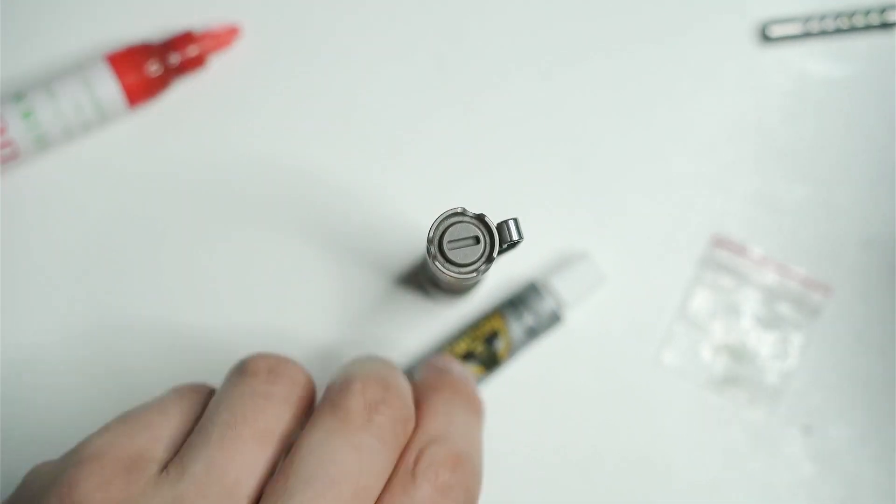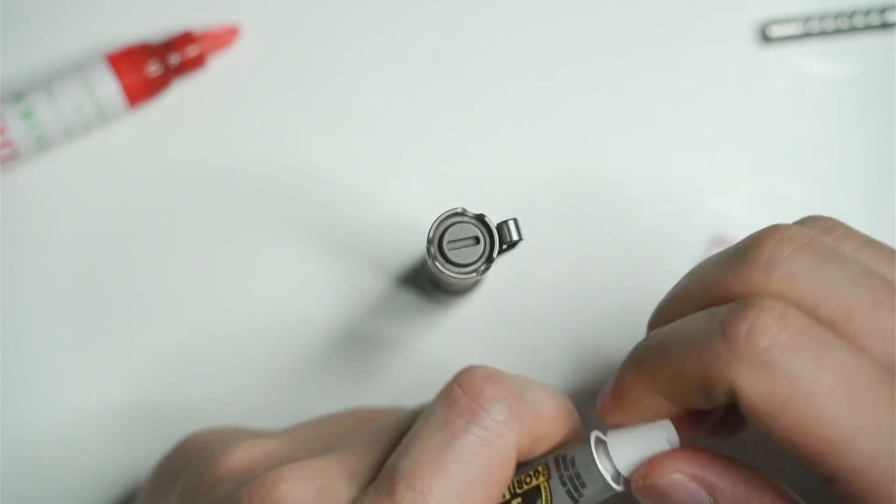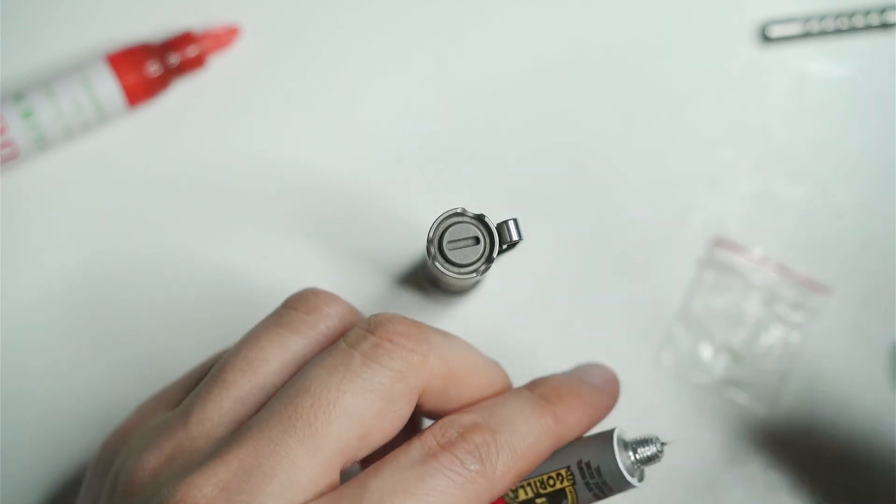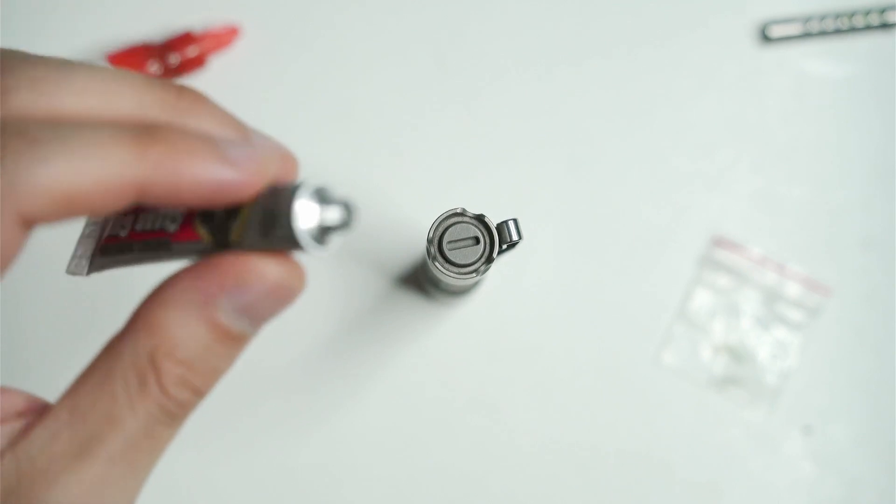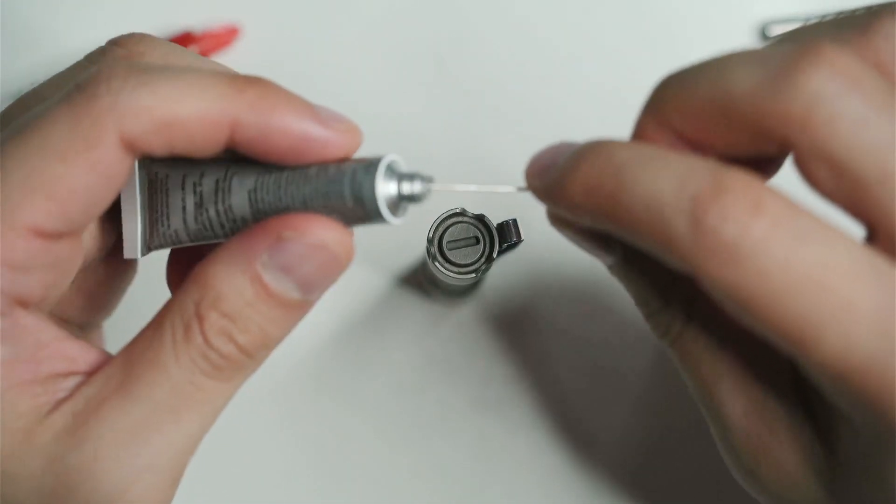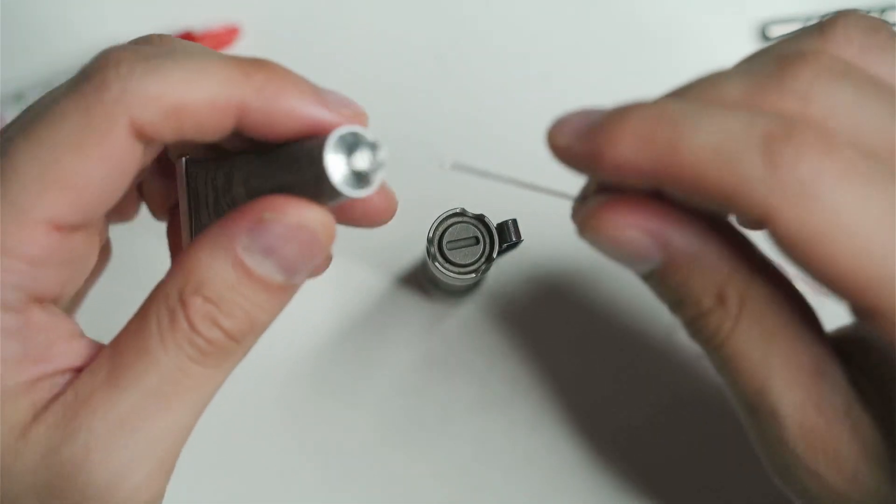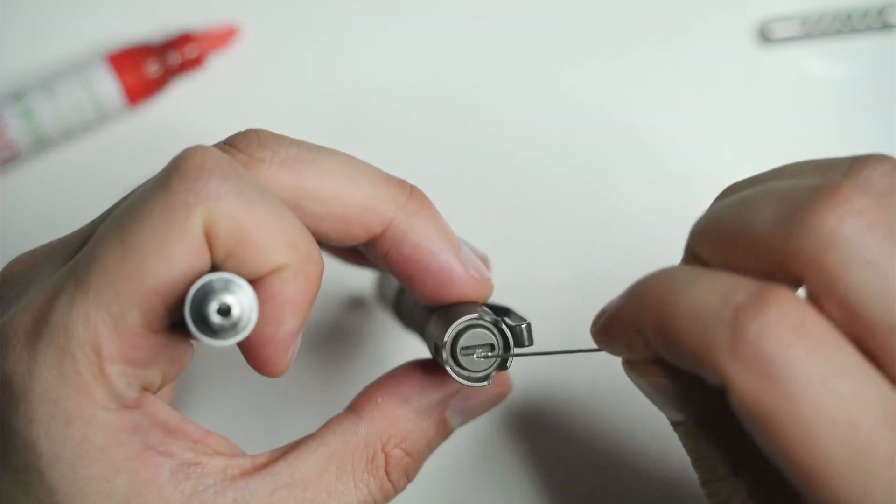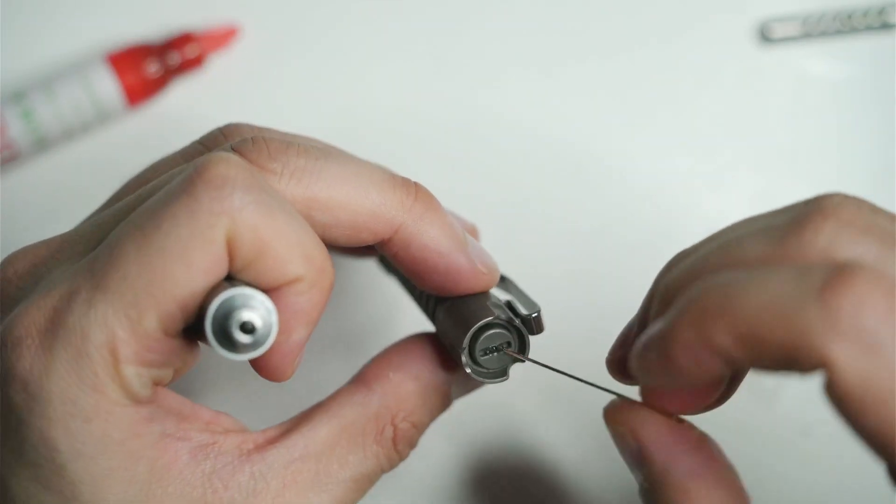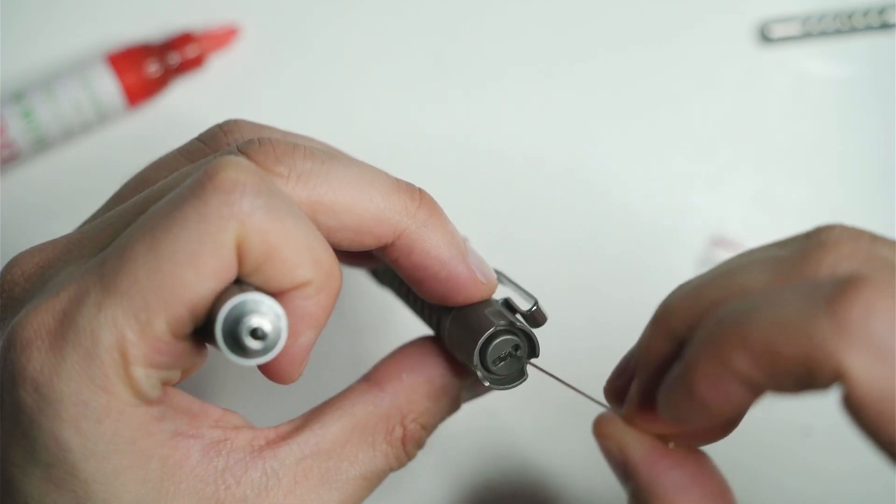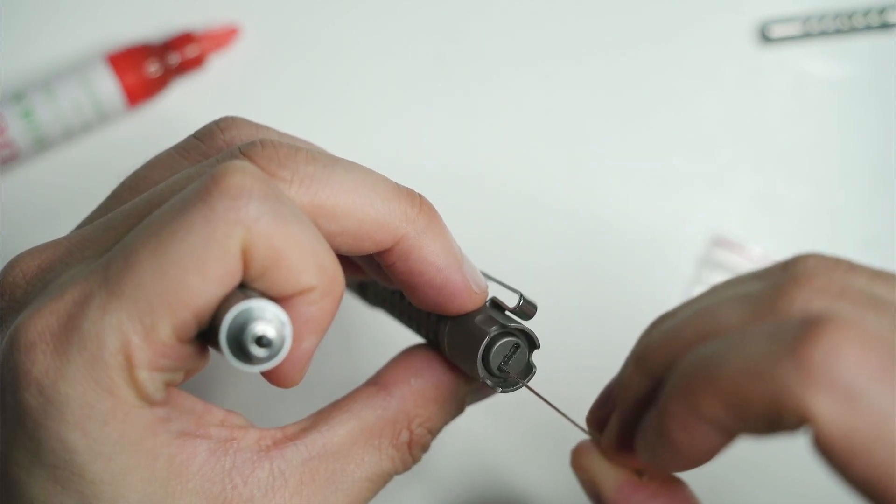So basically what I'm going to do is just open it up. I've already cracked it open before. I've got a needle here and I'm just going to slowly put some of this glue into the slot here. Okay, just sort of spread it around on the inside of the slot.